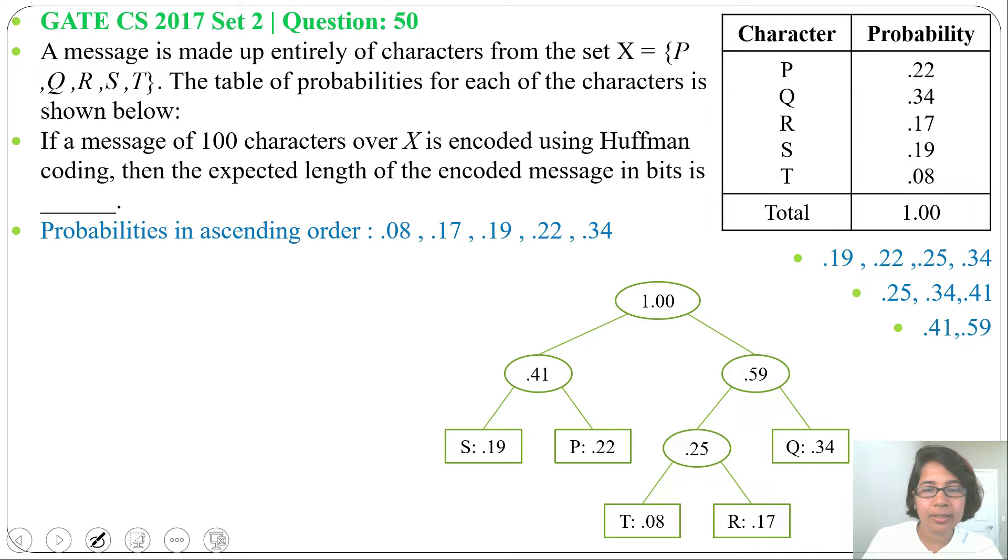Next, we will add 0 for the left side and 1 for the right side. The Huffman tree is done.